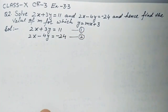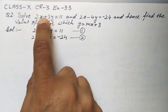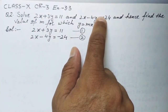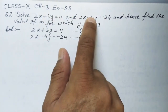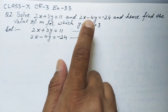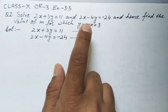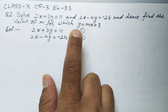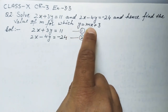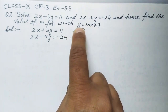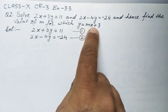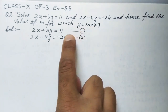In this question, we have to solve this pair of linear equations first. We will get the value of x and y from this pair of linear equations using any of the methods — substitution method, elimination method, or cross multiplication method. Then we will fill the values of x and y into the third equation to get the value of m.